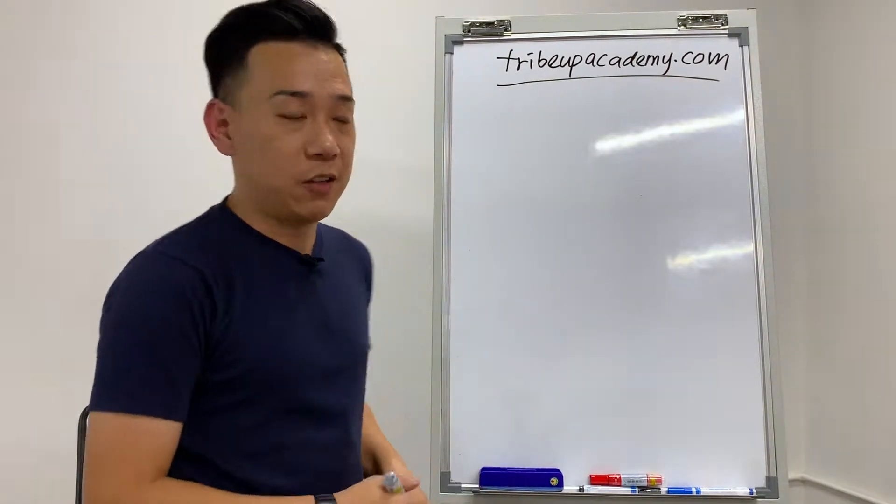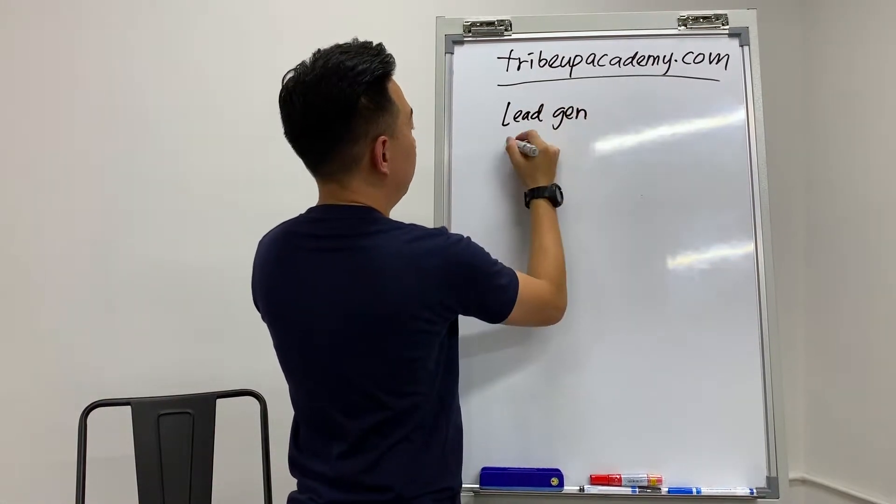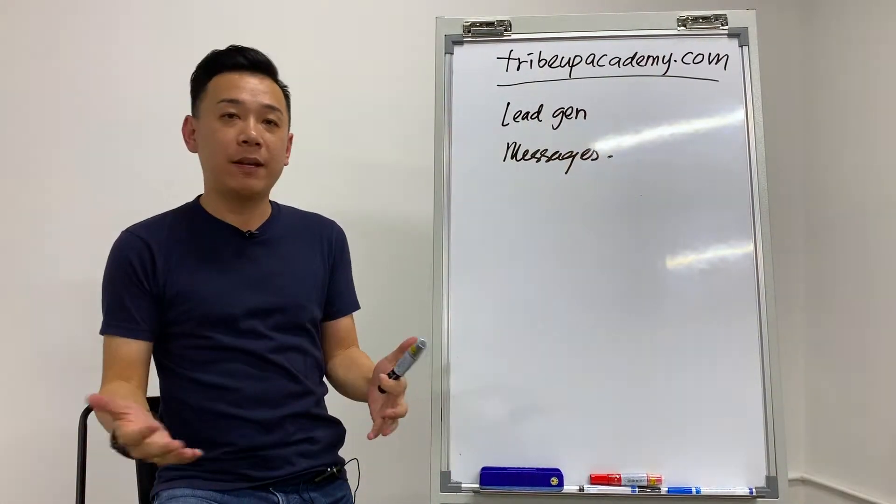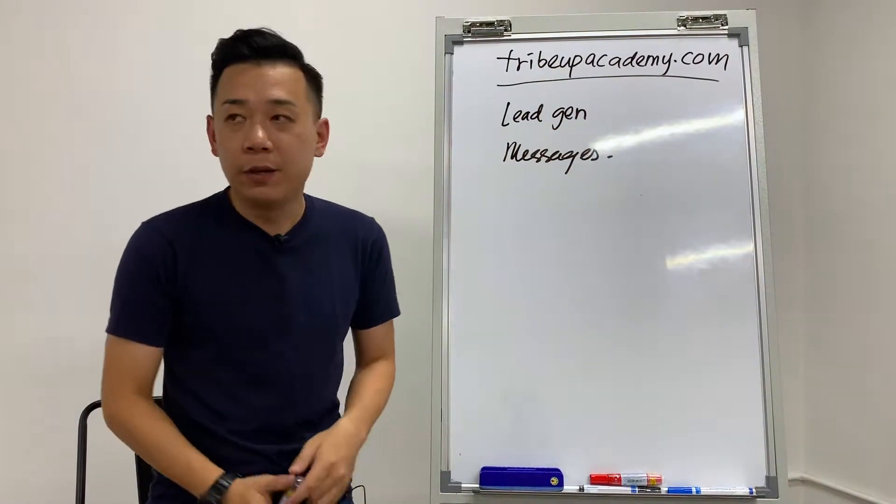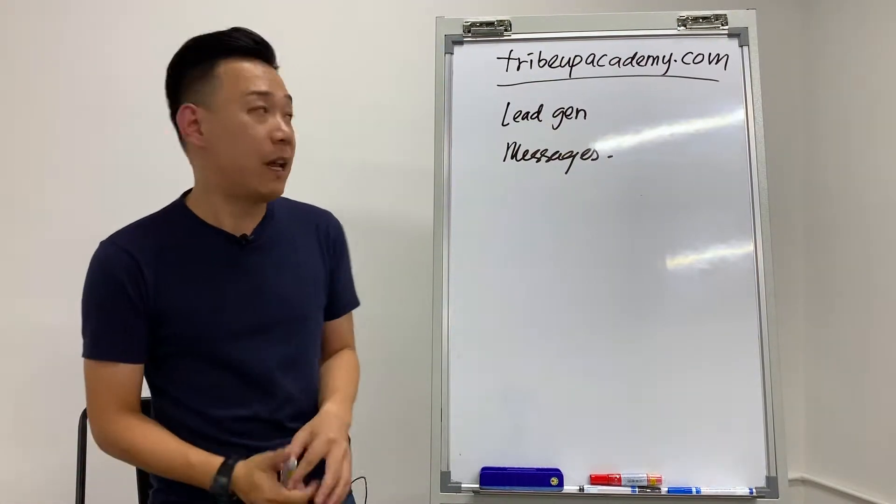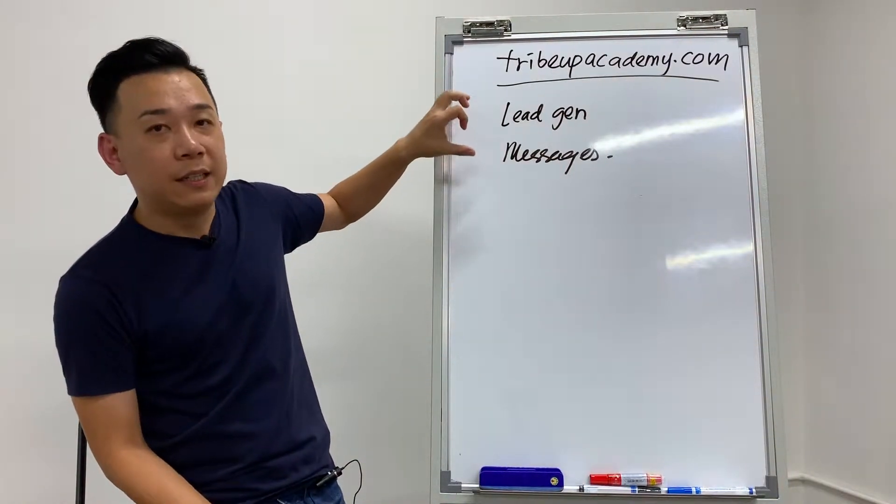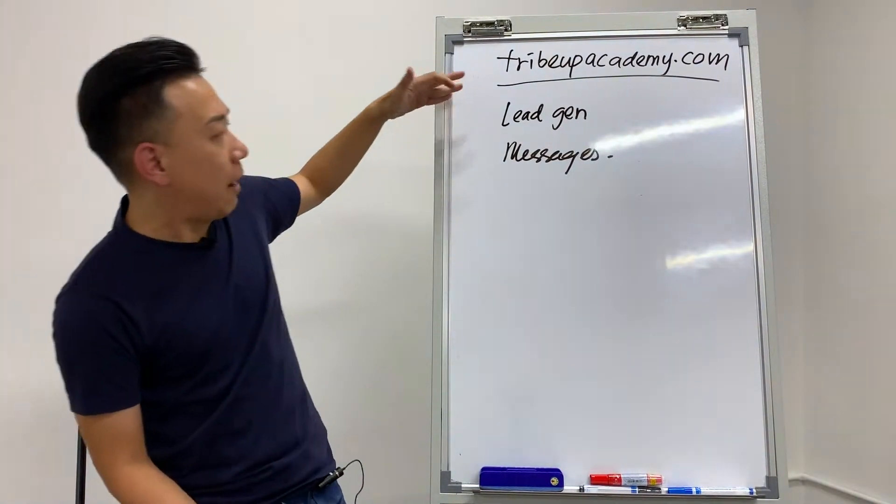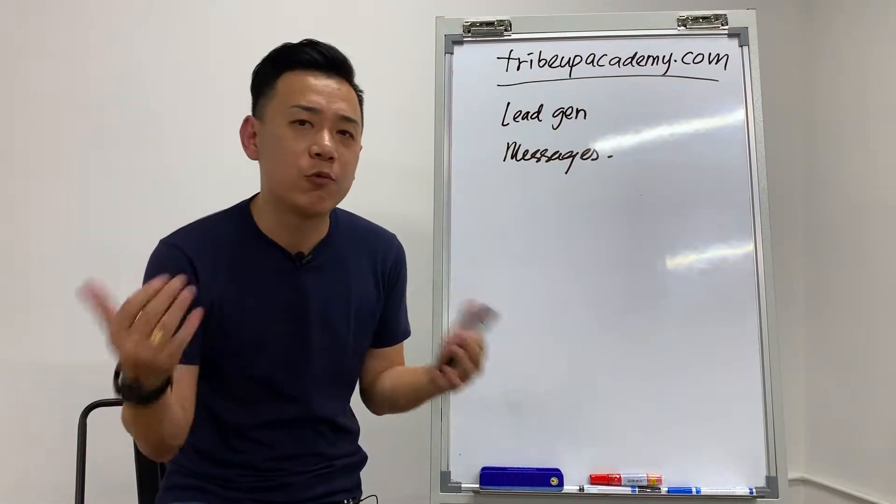One of the few objectives that you'll be using is lead gen and messages. Lead gen is very straightforward. When people click, it opens a form and then they can submit information which you can use to call them. Messages is the other one, which means when people see this advertisement they click, they will start a conversation with you on the messenger level. These two are very high quality, high intent actions.